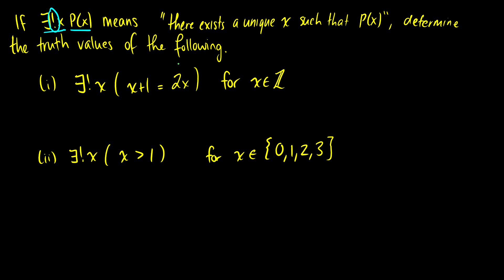x plus 1 equals 2x. We subtract x from both sides and get 1 equals x. So the only solution is x equals 1. This means there is a unique x, namely 1, such that x plus 1 equals 2x. So this first statement is true.